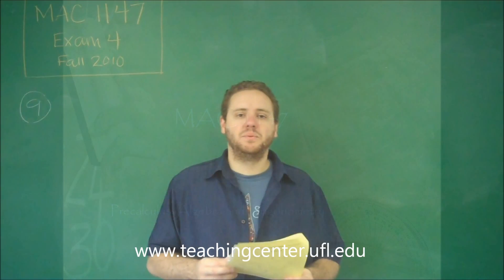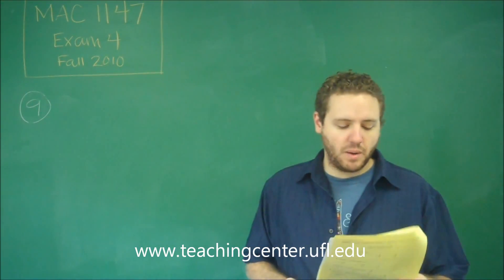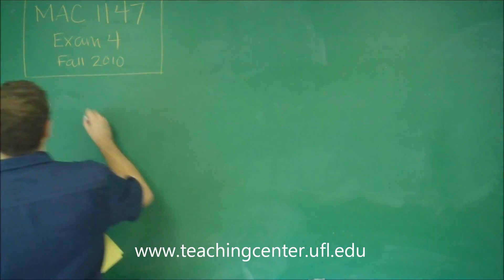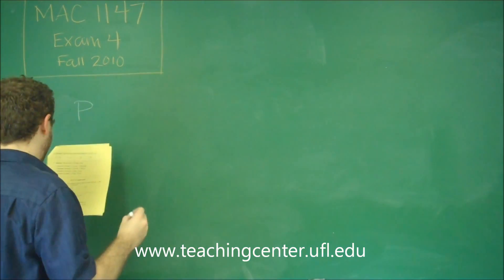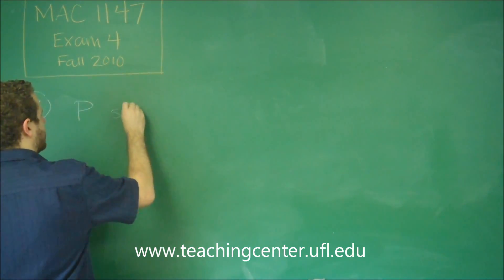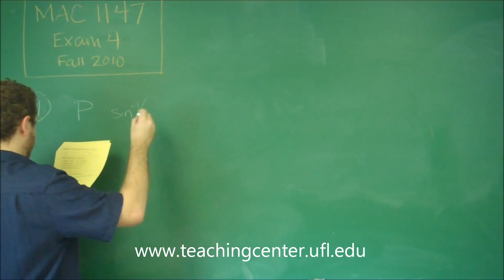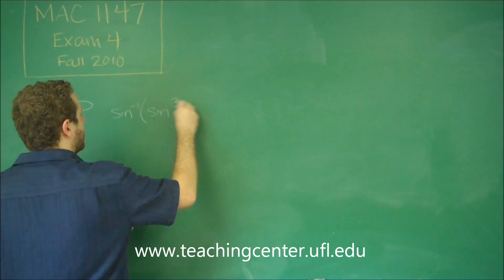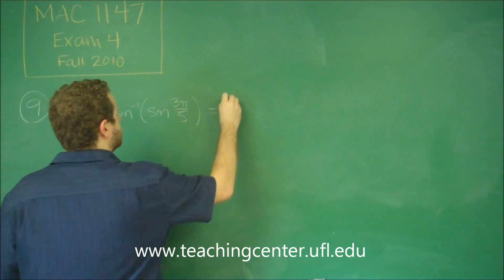Okay, so for number 9 we have a which of the following statements are true problem. So let's just go through P, Q, and R and figure out what's what here. So for P, we have that inverse sine or arc sine of sine of 3π over 5 is equal to 3π over 5.